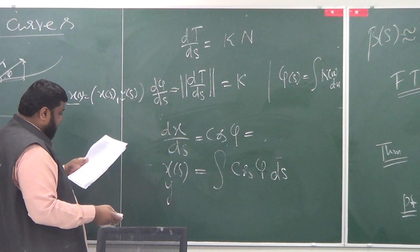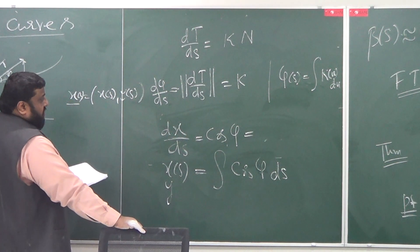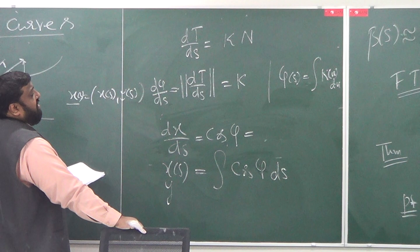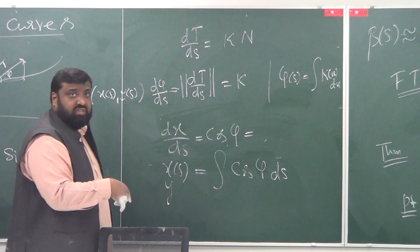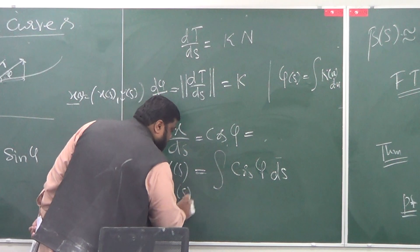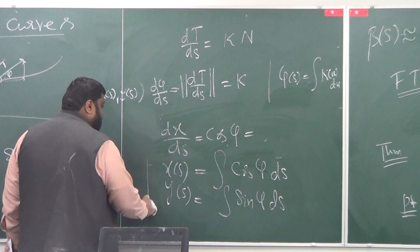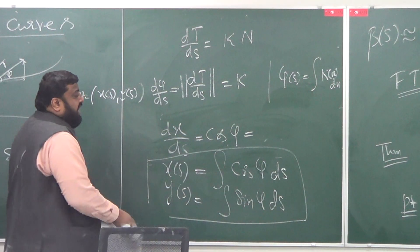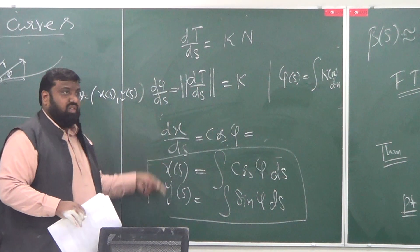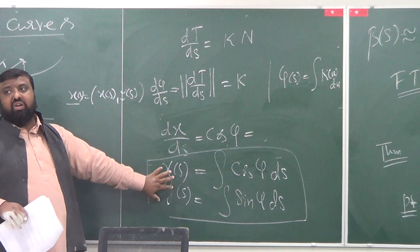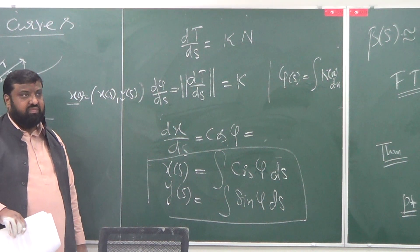Since φ is a function of s, you have to integrate with respect to s. y(s) is going to be the integral of sin φ ds. This shows that if I have φ — which I can compute through the curvature of the curve — I can find the parameterization of the curve. The whole curve can be determined through a simple piece of information: just tell me the curvature.